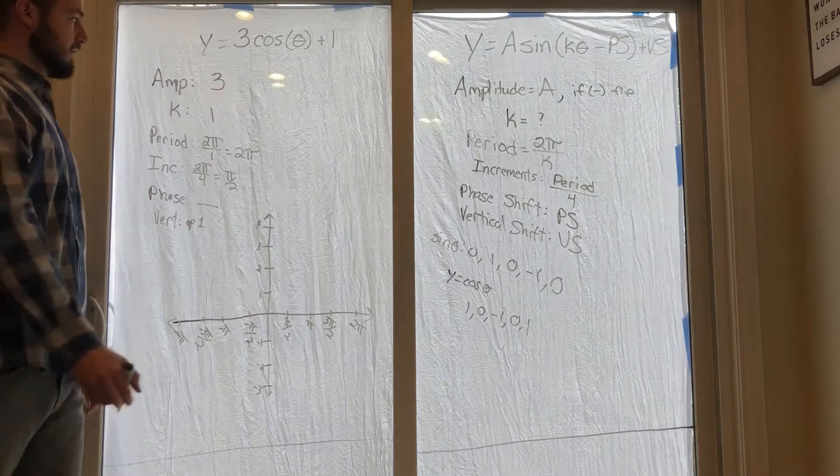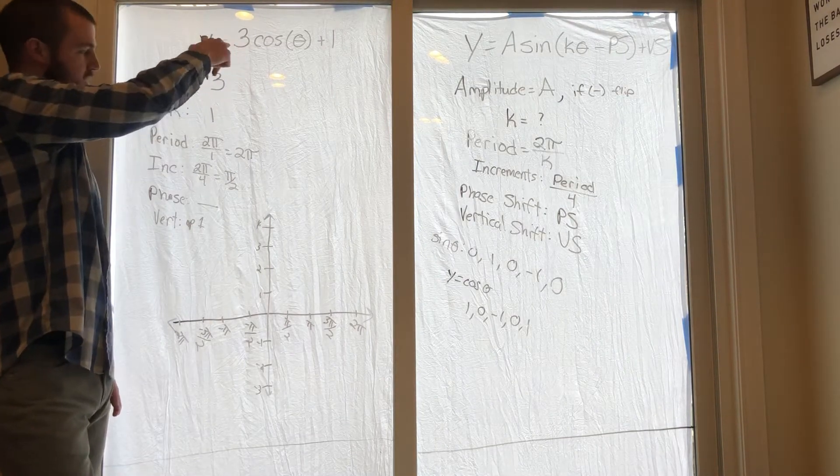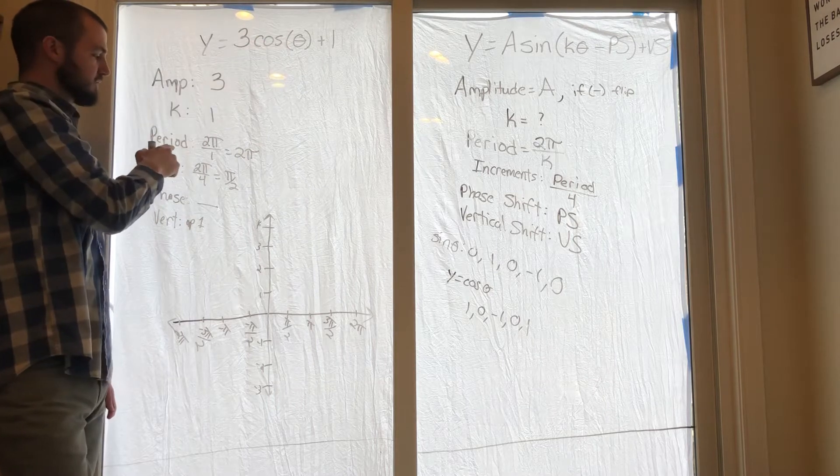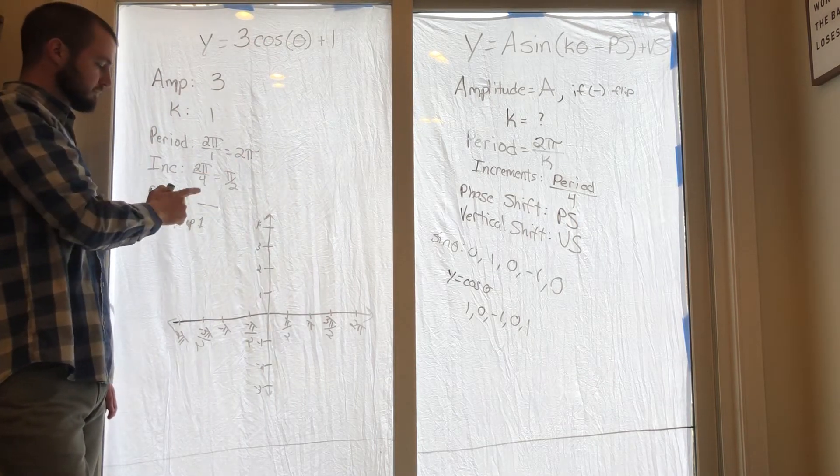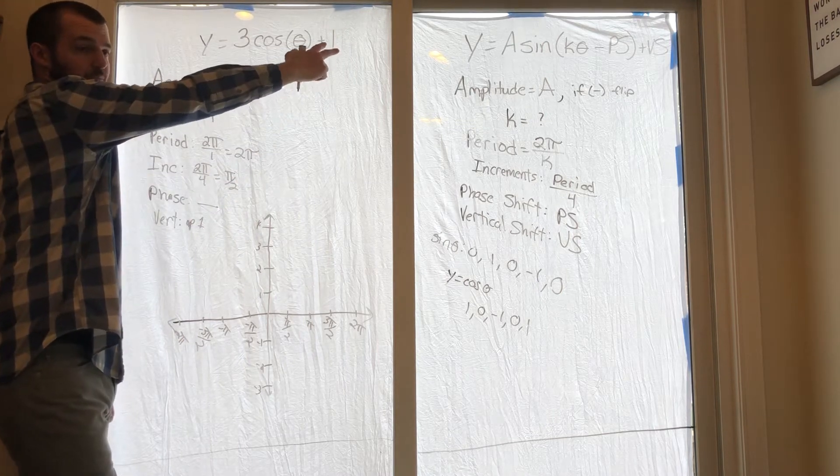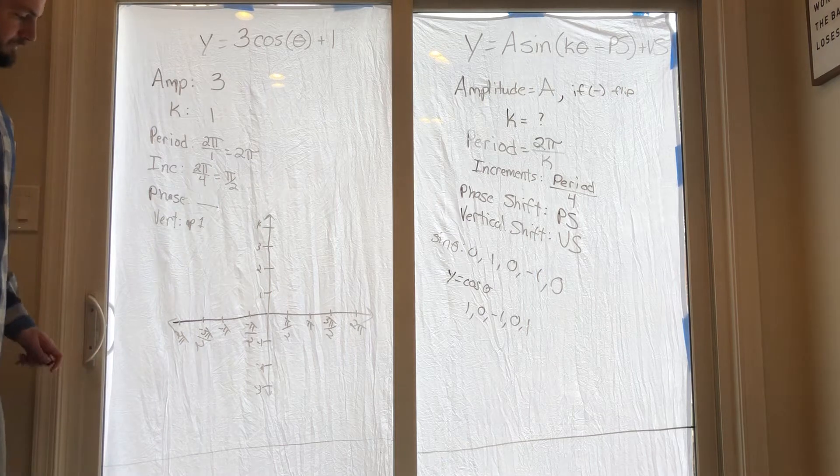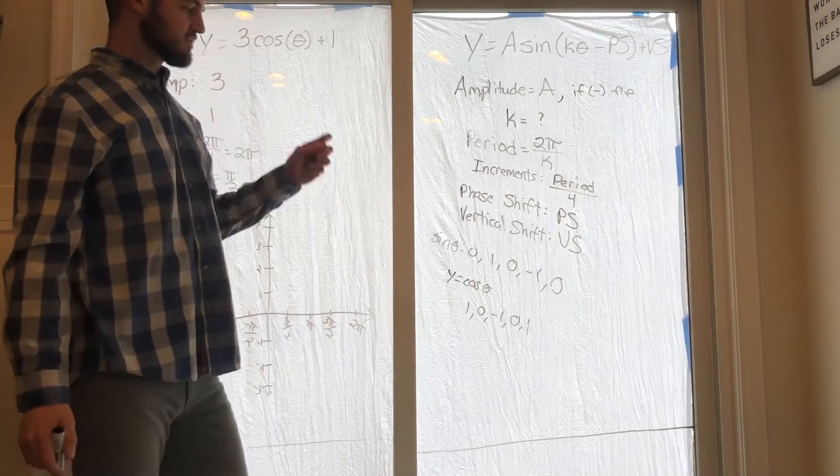You should have had an amplitude of 3, k value of 1 like it always is for now, period of 2π, increments of π/2. Doesn't have a phase shift, your vertical shift is up 1. Now when you go to graph, remember to pay attention - you're doing cosine.